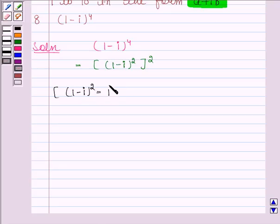So this is equal to 1 square plus iota square minus 2 into 1 into iota.